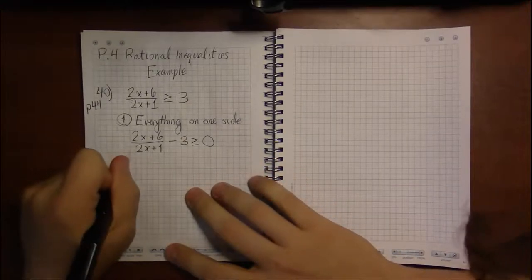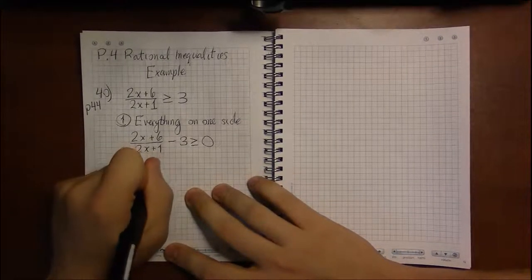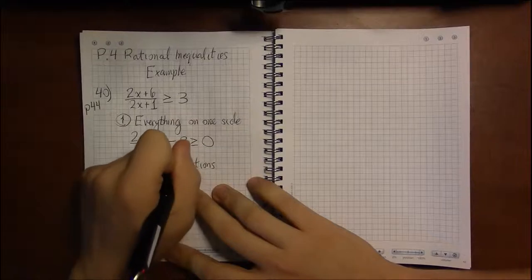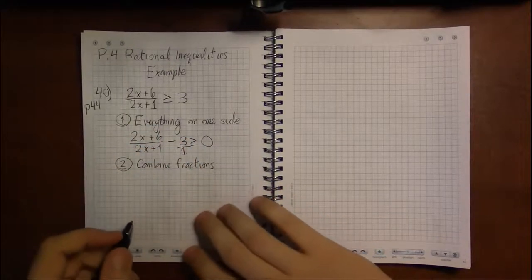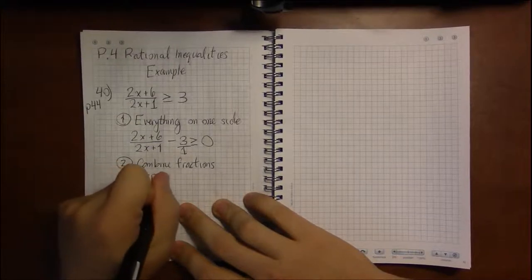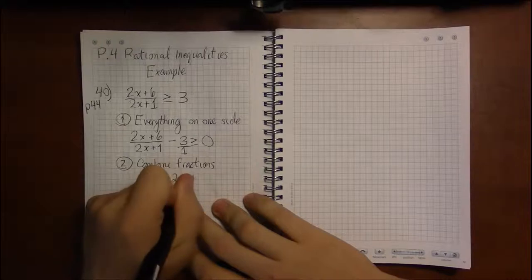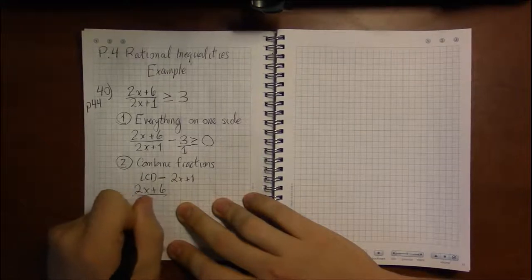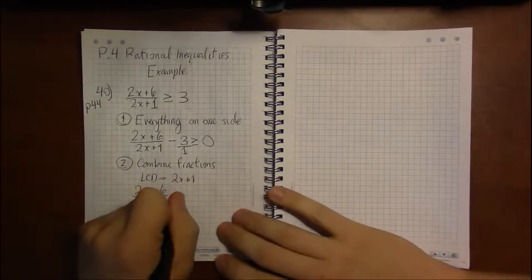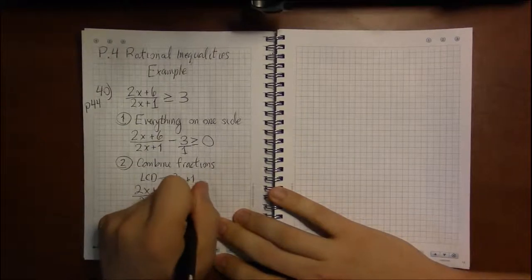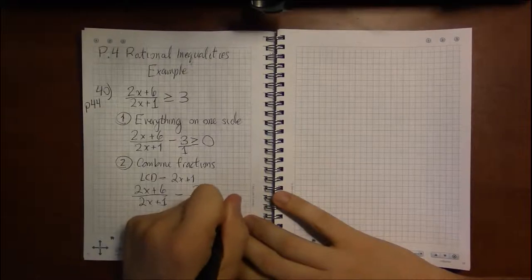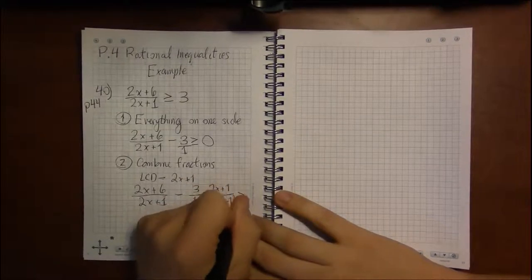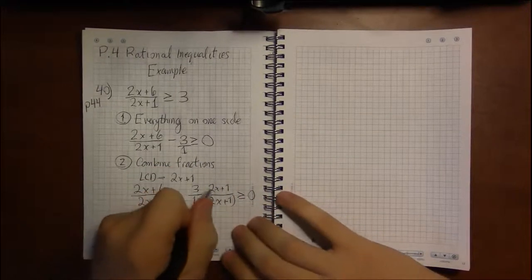Now, we're going to have to combine fractions, get common denominators. Let's see. That 3 is over 1. So, our least common denominator is just going to be 2x plus 1. Which means we don't need to do anything to the first fraction, because that already has 2x plus 1 as its denominator. But in order to get 2x plus 1 as the denominator of 3 over 1, we're going to have to multiply top and bottom by 2x plus 1.